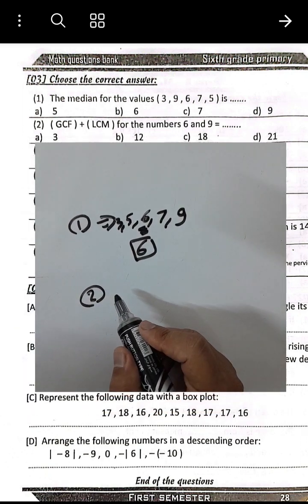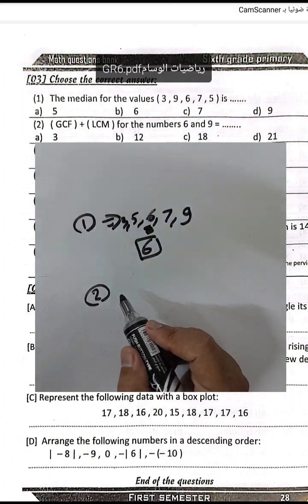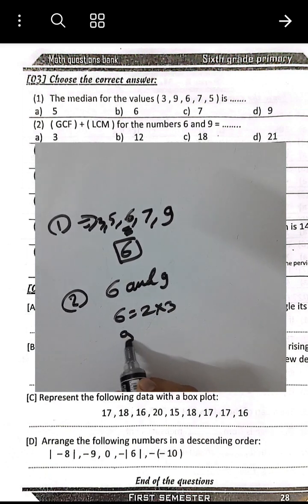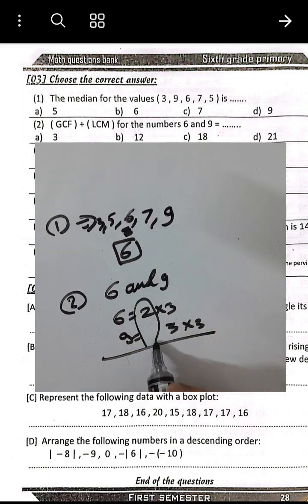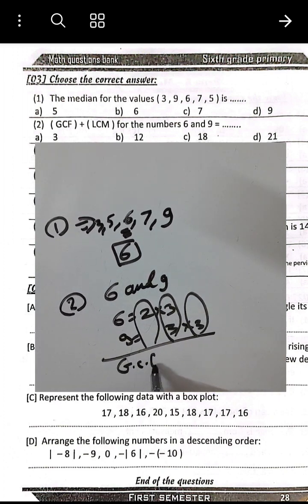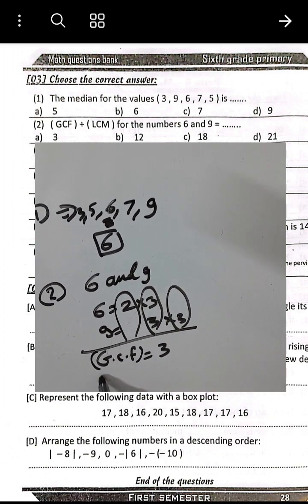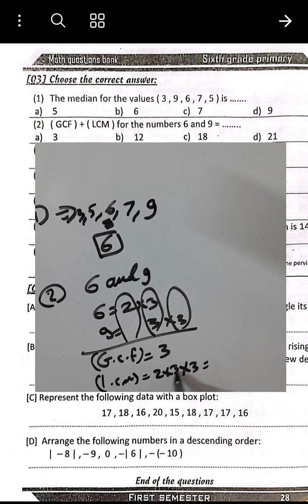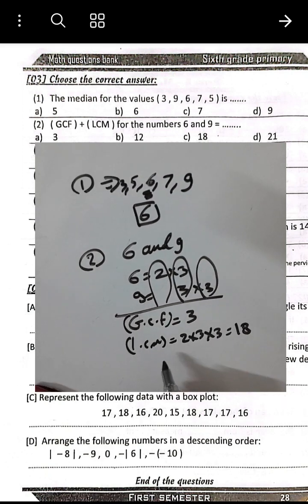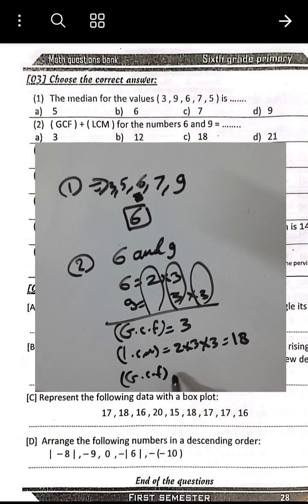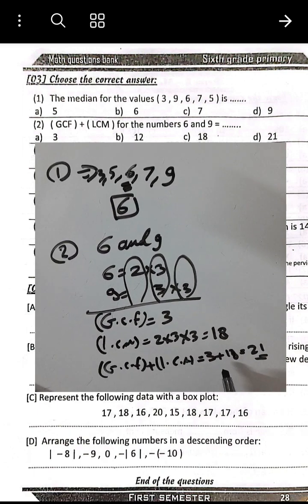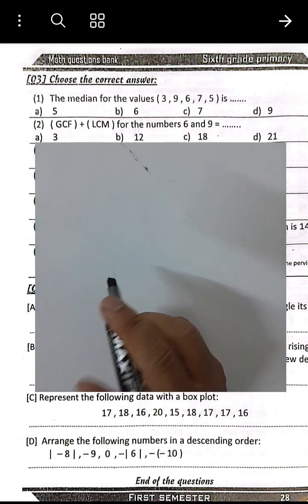Question number 2: Greatest common factor and least common multiple of 6 and 9. 6 equals 2 times 3; 9 equals 3 times 3. The GCF is 3. The LCM is 2 times 3 times 3 equals 18. The sum of the GCF and LCM is 3 plus 18 equals 21.